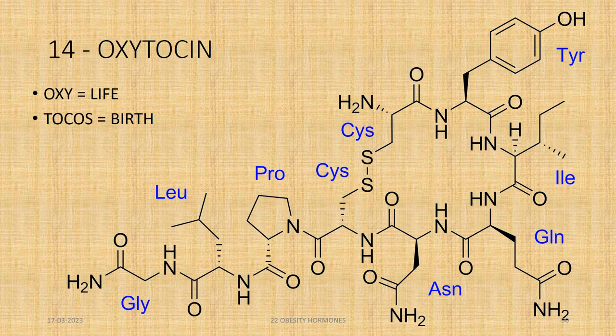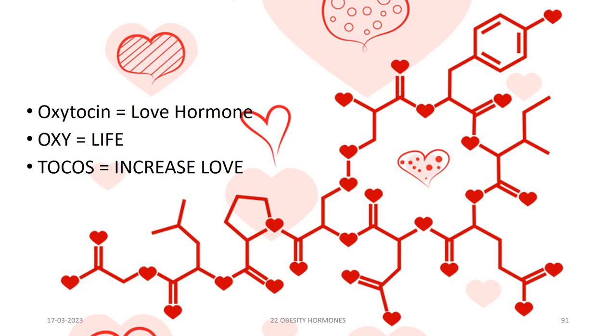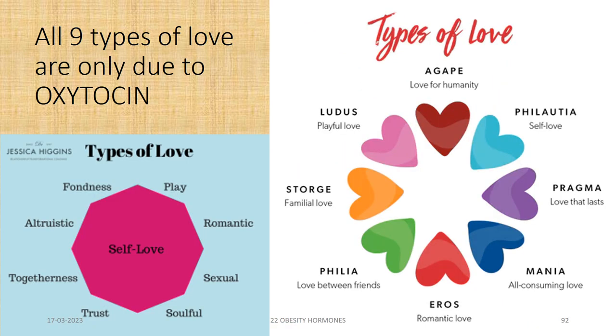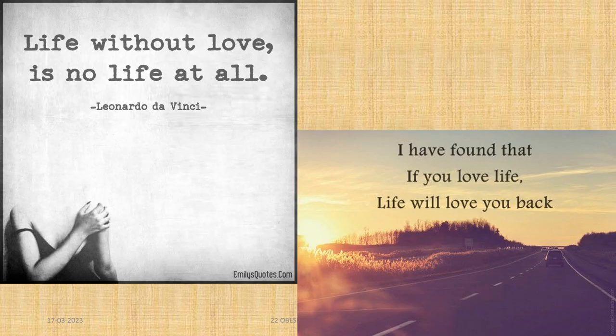Oxytocin is another important hormone. The word oxytocin comes from oxy meaning life and tokos meaning to give birth. Hence oxytocin is also known as the love hormone — all nine types of human love are due to oxytocin, and that's why love is also known as chemistry or biochemistry. It is the oxytocin which makes you love life, love to live longer, all forms of life, nature, beauty, and family.